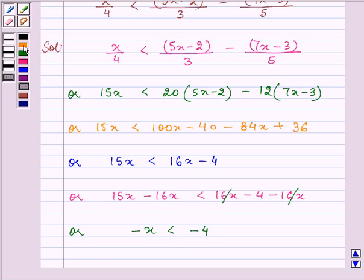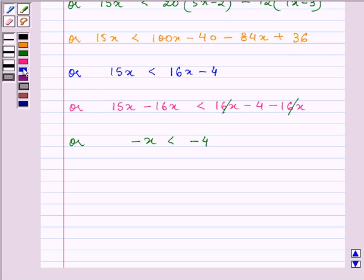Now on multiplying both the sides by minus 1 and following the rule that when both sides of the inequality are multiplied by the same negative number then the sign of inequality changes. So now we have x is greater than 4.